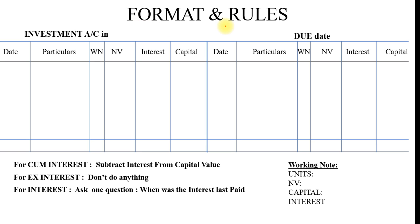Now this is the format and some rules: Investment Account in Dash — meaning whatever you are going to invest in, it can be debentures, bonds, government bonds, or any kind of securities. Due date is a very important date. Columns include: particular, working note, NV (nominal value), interest, and capital — on both debit and credit sides. Rule number one: for cum interest, subtract the interest from capital value. For ex interest, don't do anything. For finding the interest, ask only one question: when was the interest last paid? We also have a working note where we will find units, NV, capital, and interest.